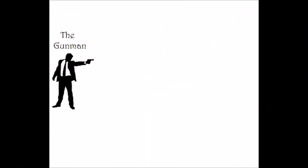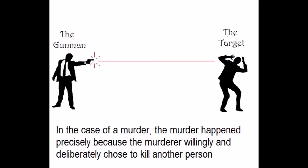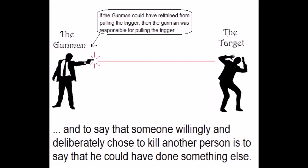Suppose that there is a gunman and a target. In the case of a murder, the murder happened precisely because the murderer willingly and deliberately chose to kill another person. And to say that someone willingly and deliberately chose to kill another person is to say that he could have done something else — which is to say, if the gunman could have refrained from pulling the trigger, then the gunman was responsible for pulling the trigger.